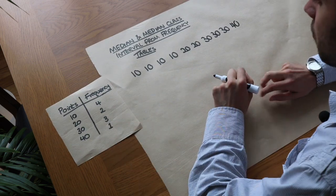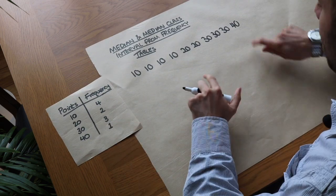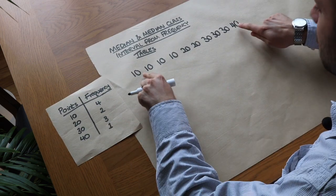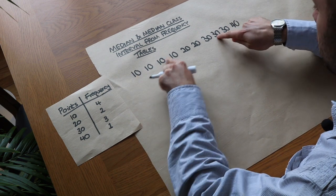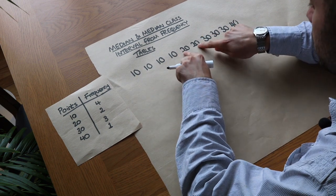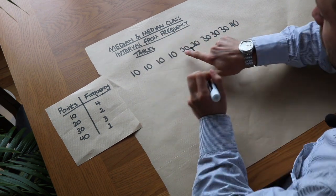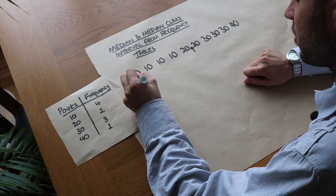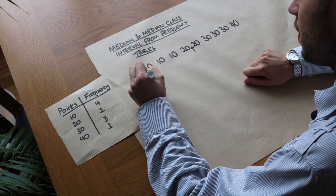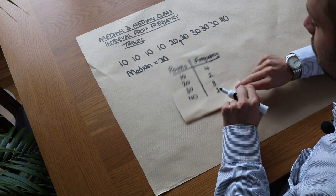If we found the median the conventional way, we'd count into the middle and we can see halfway between 20 and 20 is just 20, so the median is 20.